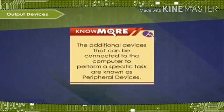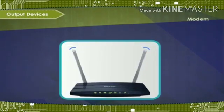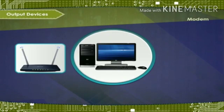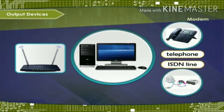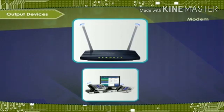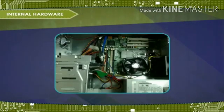The additional devices that can be connected to the computer to perform a specific task are known as peripheral devices. Modem stands for modulator and demodulator. It is an electronic device that allows a computer to exchange information over telephone or ISDN lines. The word modem is derived from modulate — to change a digital signal into an analog signal — and demodulate — to convert an analog signal into a digital signal at the receiving computer.